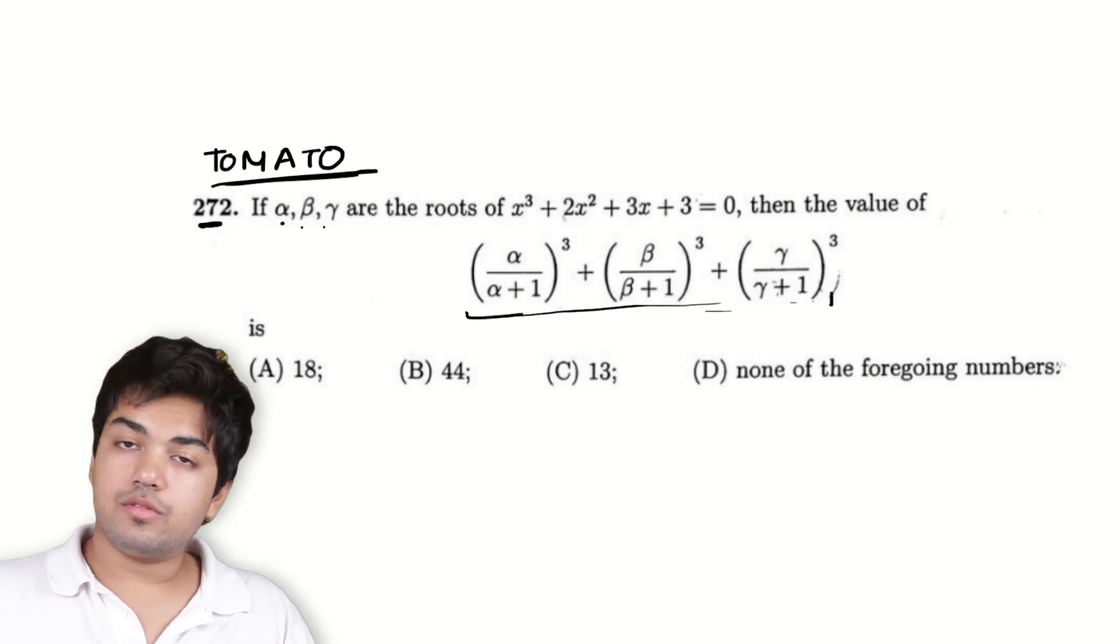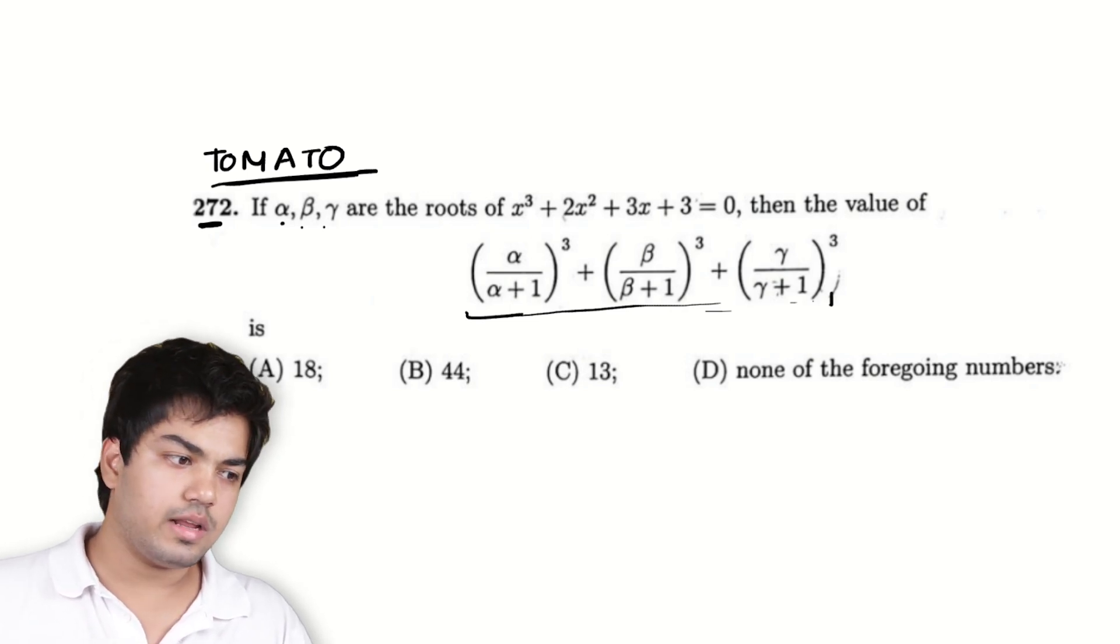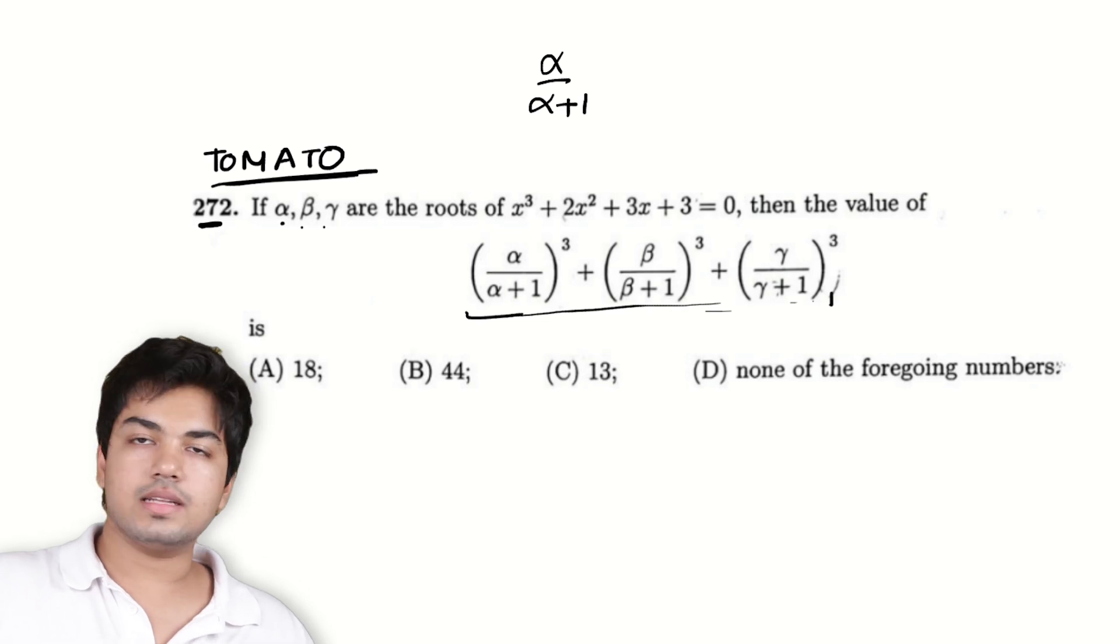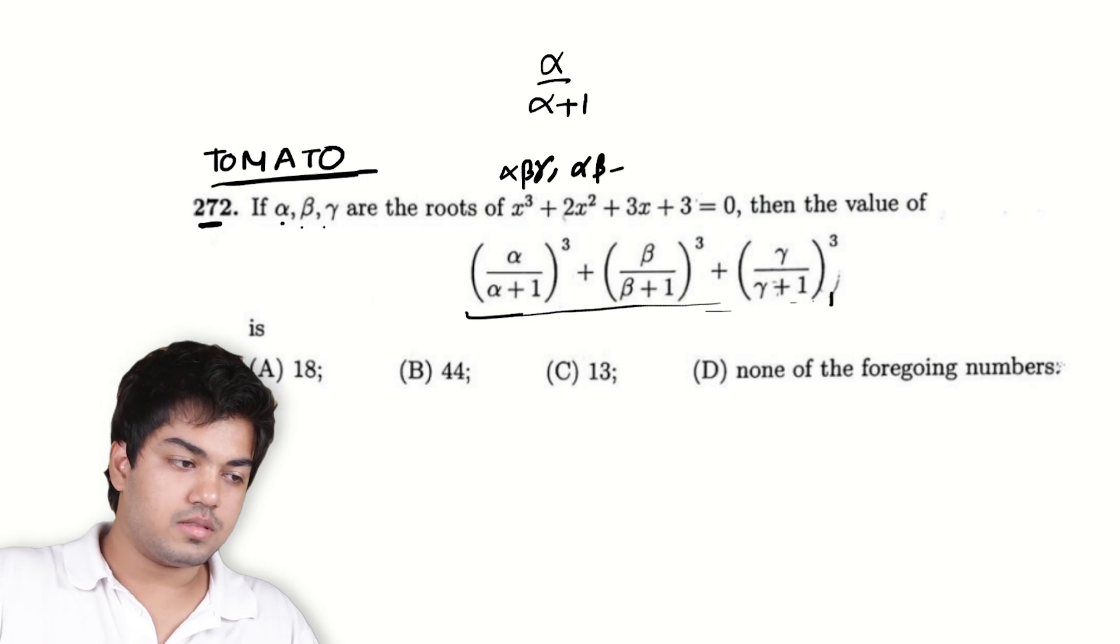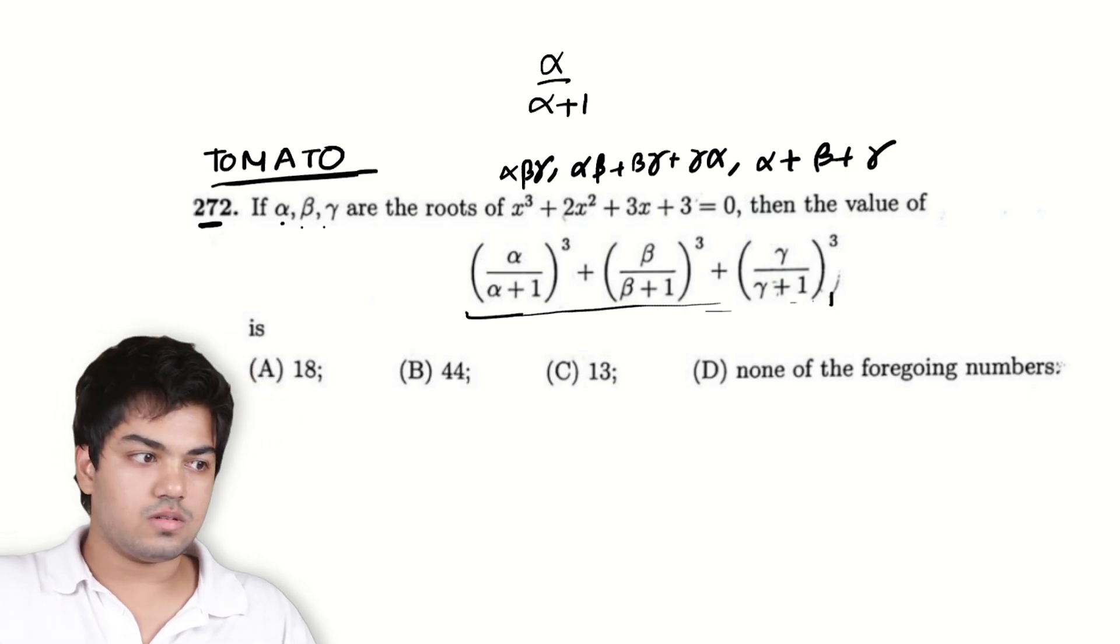Great, so I hope you've tried the problem and noticed that if not thought about properly there's a major computation task here. In particular, how would you find something like α/(α+1)? That alone is not possible. What Vieta will tell you is how to combine these things. In particular, Vieta will tell you what αβγ, αβ + βγ + γα, and α + β + γ are. This is what Vieta will tell you.